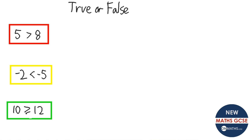Okay, so the first one says 5 is bigger than 8 — that is clearly not the case, so false. The next one's quite tricky: we know that 2 is less than 5, but minus 2 is a bigger number than minus 5. Minus 2 is closer to 0, so it's bigger, so that is also false. And the last one says 10 is greater than or equal to 12 — 10 is not greater than 12 and not equal to 12, so that is also false.